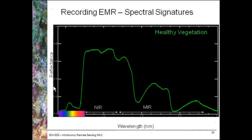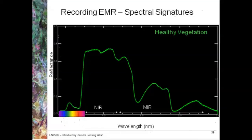The y-axis shows reflectance on a scale of 0 to 1, or it might be 0 to 100%. We see in the visible range, which is only a really small portion of the electromagnetic spectrum, the blue wavelengths at the shorter wavelengths through to the red at the longer wavelengths — around about 400 nanometers on the left up to around 700 nanometers where the red is. Vegetation appears green because within the visible portion of the spectrum it's the green light that's reflected mostly. It's actually absorbing red and blue light for photosynthesis.